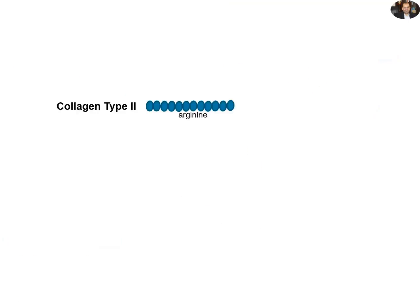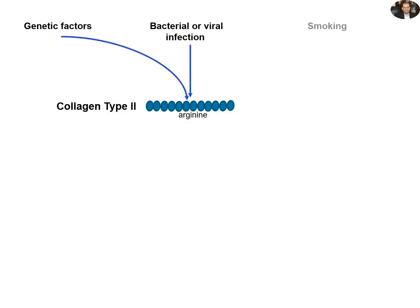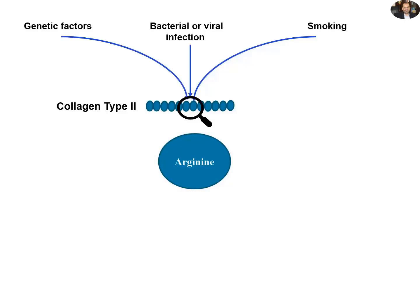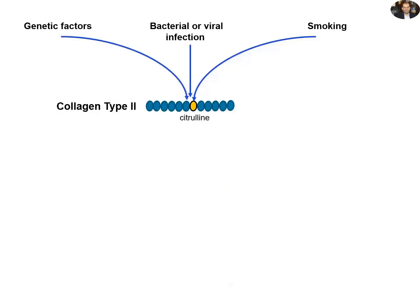In our body we have natural collagen type 2. Unfortunately, some genetic factors, bacterial or viral infection, or smoking can induce mutation in the collagen too. This mutation results in replacement of arginine amino acid with citrulline amino acid. This little change has devastating lifelong consequences on the affected people.